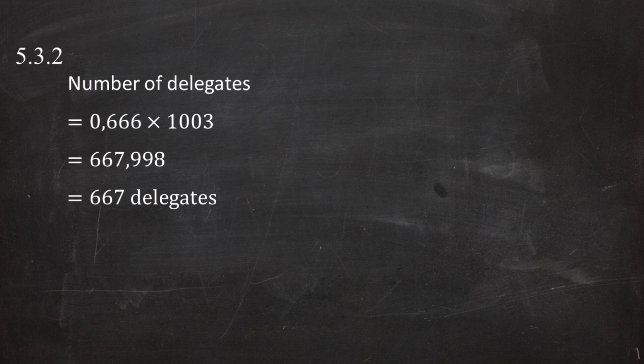This must be rounded down to the nearest whole person, giving 667 delegates. We round down rather than up because rounding up would place too many people in the auditorium. Rounding down gives fewer than the allowed maximum, which still conforms to COVID regulations.